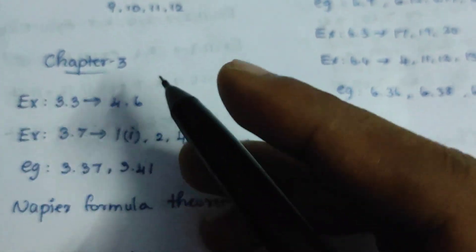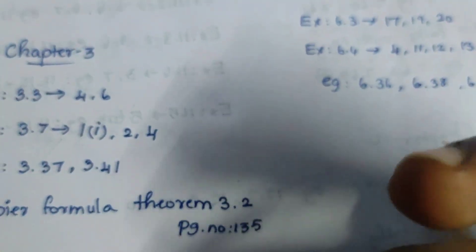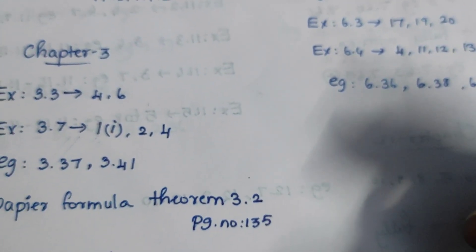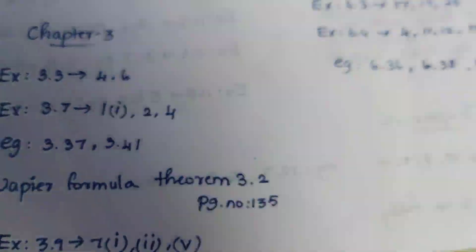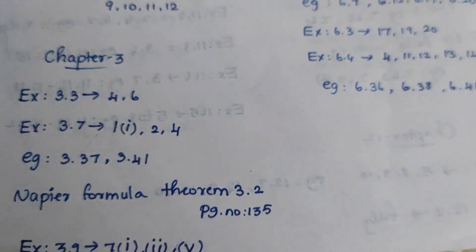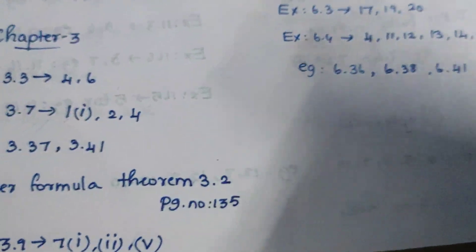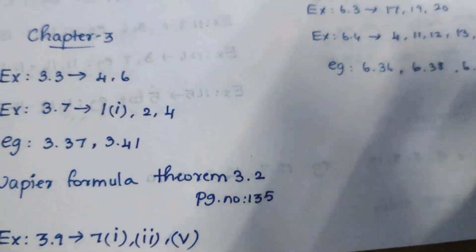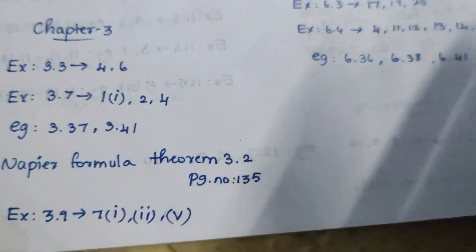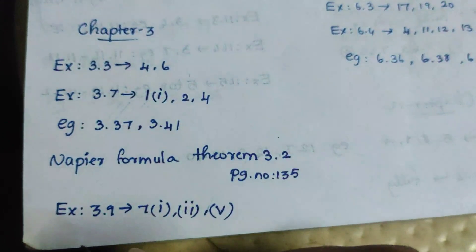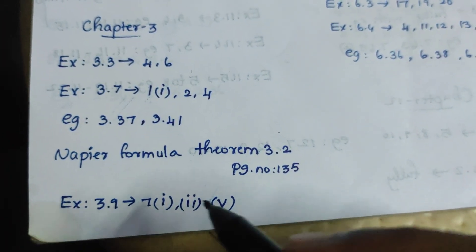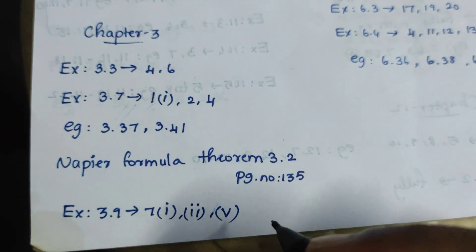I think it will be the third chapter of Algebra. The theorem will be custom, but the sentiment will be the same. One of the theorems will be the same. Exercise 3.9: 7, 1st, 2nd, 5th.